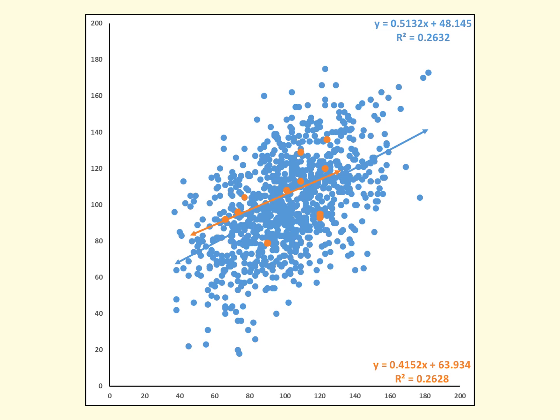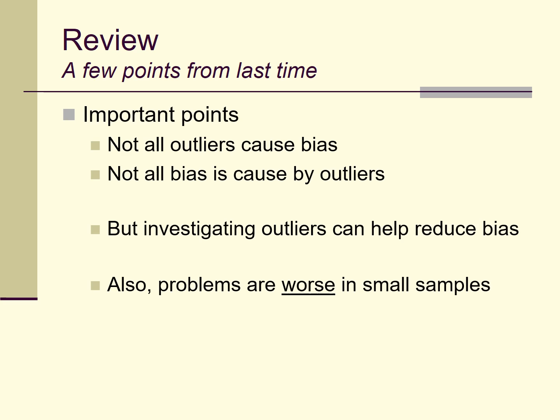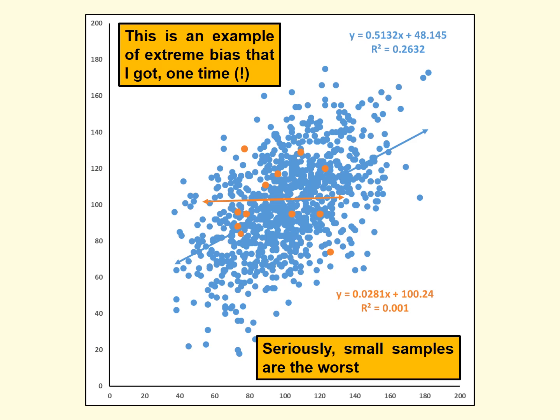A couple important points here: not all outliers cause bias, and not all bias is caused by outliers, but as I said last time, investigating outliers can often alert us to problems which may lead to bias in estimation. It's often worth looking for outliers anyway — one of the many benefits of detecting and dealing with outliers is reducing some of the risk toward bias in estimation. Especially if there are other things which might lead to bias, like violations of assumptions, those tend to get much worse when outliers are present. All these problems — problems of outliers, problems of violated assumptions — are a lot, lot, lot worse in small samples of data.